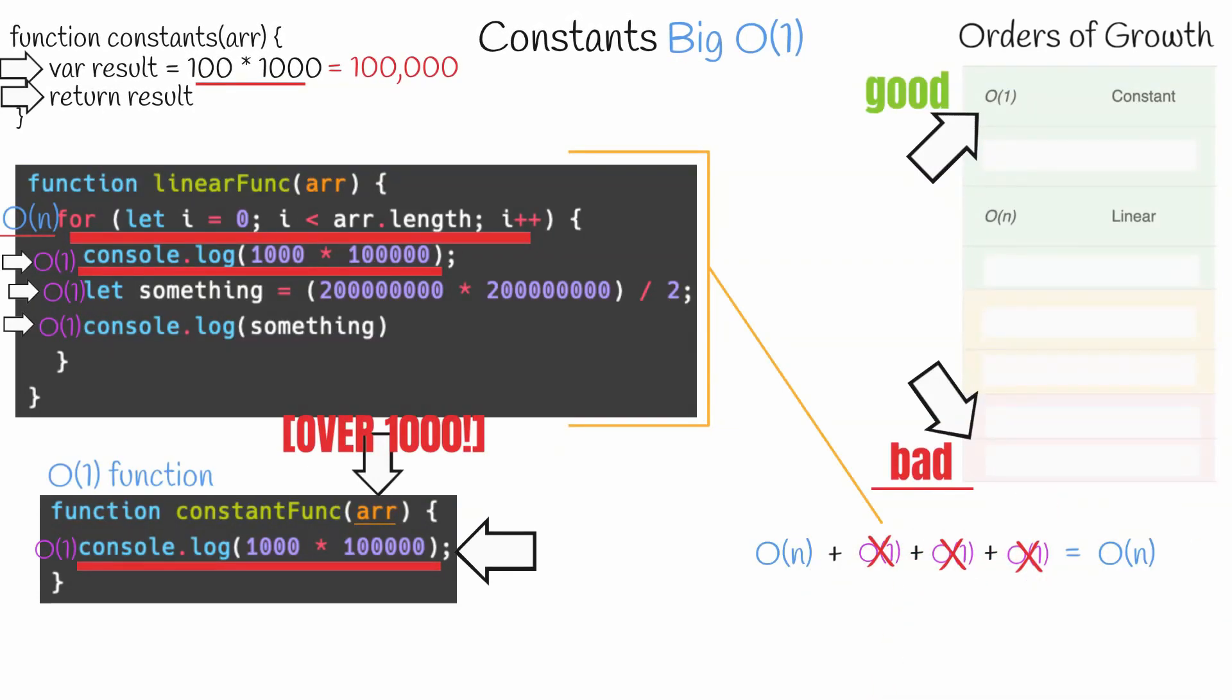And this, ladies and gentlemen, is why we ignore constants, because we are actually just eliminating the non-dominant items because as a function's input moves towards infinity, constants become less and less significant.